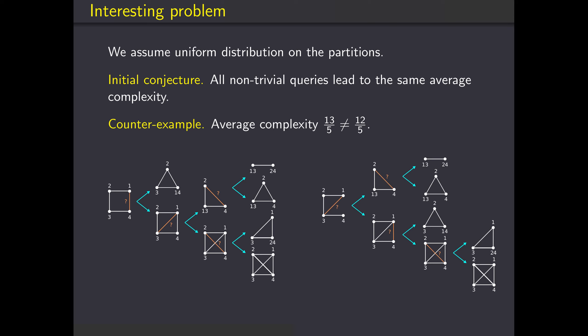What do I mean by trivial queries? If you know that A and B are in the same block and B and C are in the same block, then you already know that A and C belong to the same block — that's transitivity. So you don't need to ask the query (A, C); I call this a trivial query. Similarly, if you already know that two blocks are distinct — you have a negative query between them — you don't need to add more negative queries.